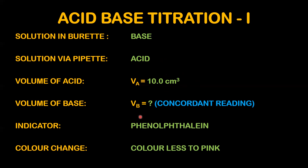The volume of base (VB) is determined from the titration. VB will be the concordant reading, which means that you take two readings that agree with each other. The volume of base will be known from this practical.